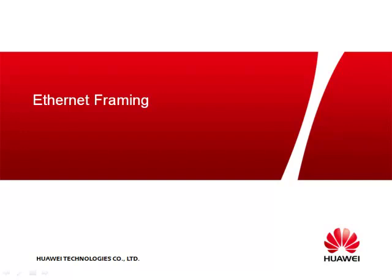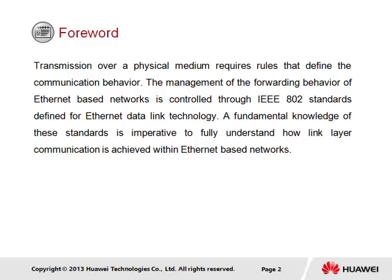This section is Ethernet Framing, and introduces the basic role and operation of Ethernet technology within a network. Transmission over a physical medium requires rules that define communication behavior. The management of the forwarding behavior of Ethernet-based networks is controlled through IEEE 802 standards defined for Ethernet data link technology. A fundamental knowledge of these standards is imperative to fully understand how link layer communication is achieved within Ethernet-based networks.